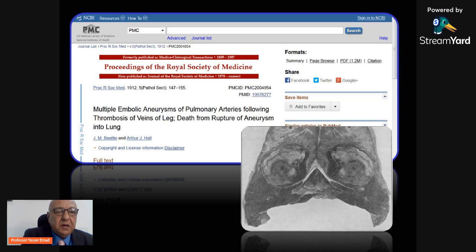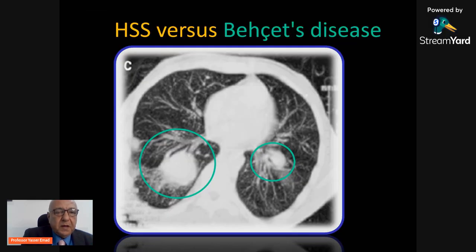This makes the lung an important target organ in patients suffering from Hughes-Stovin syndrome or even patients with Behçet disease. No one can tell the difference between Hughes-Stovin and Behçet disease regarding thrombotic events or the aneurysmal pattern seen in both clinical conditions, because they are similar and identical in both.